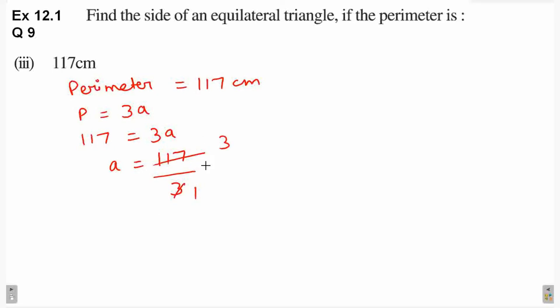3 3s a 9. 2 carry. 2 and 1 makes 3, 3 1s a 3. A is equal to 39. Therefore, side of triangle is equal to 39. Saath mein unit of measurement kea lagagi? Centimeter. This is your answer.